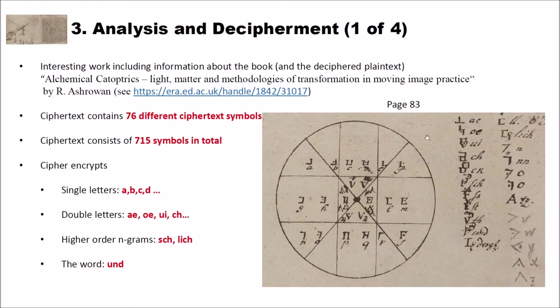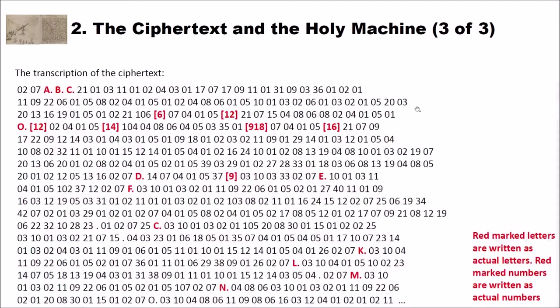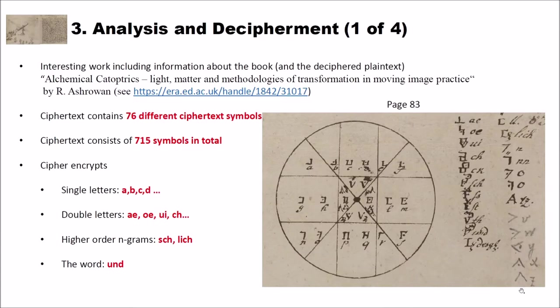And here on the right side, you can see the original key. And the funny thing is that this key is also part of the book. So on page 83, you see this key here. So you have to go through the book. Remember that the ciphertext was on page 24. But then on page 83, you can see this key here. And with respect to our ciphertext, the ciphertext contains 76 different ciphertext symbols. But in these symbols are also the Latin letters and the non-encrypted digits included. Then the ciphertext I've just shown you consists of 715 symbols in total.